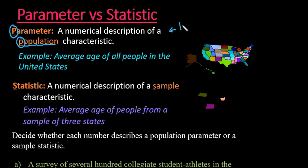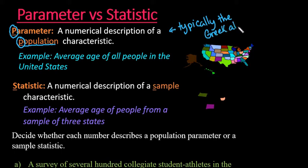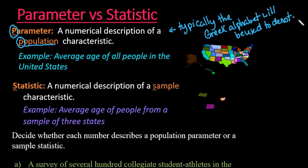Typically when you get into using symbols for things, this is going to be the Greek alphabet. So anytime you see a Greek letter in statistics, a lot of times that is going to be used for a population parameter. If you're just starting a statistics class, I recommend that as you move through your course, maybe create a symbol list, because that's the hardest thing about statistics — all of the different symbols, and knowing whether those symbols go with parameters or with a statistic.